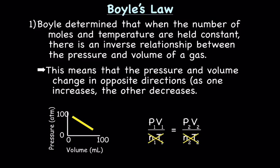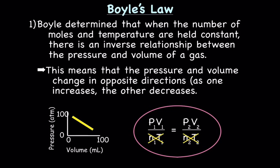Here is our equation one more time with number of moles and temperature crossed out because for Boyle's Law they're held constant. So when calculating using Boyle's Law — dealing with only pressure and volume — you can ignore the number of moles and temperature and simply use P1V1 = P2V2.